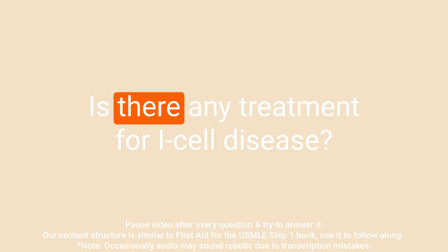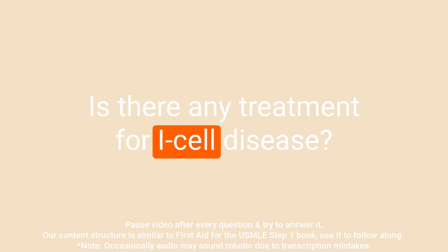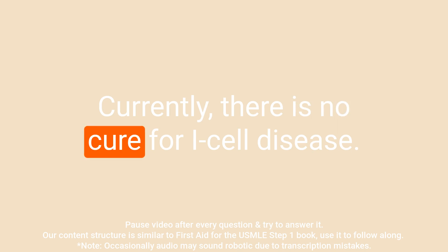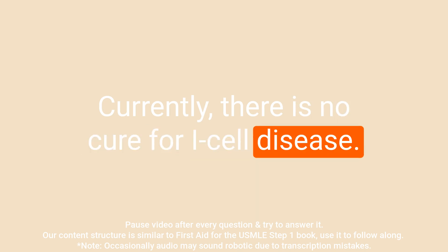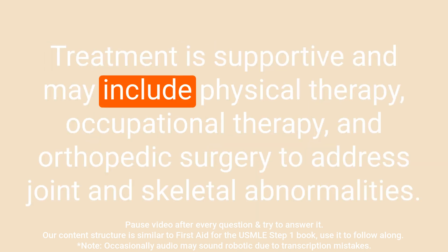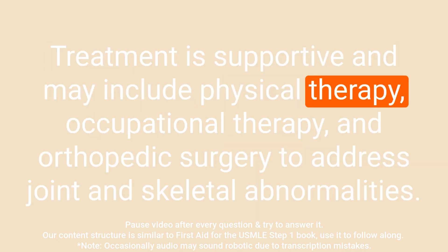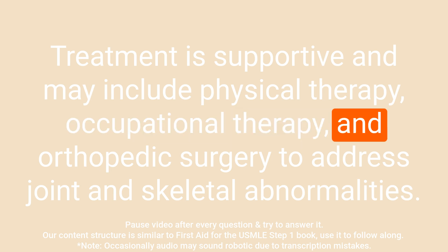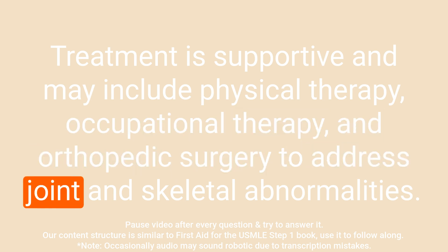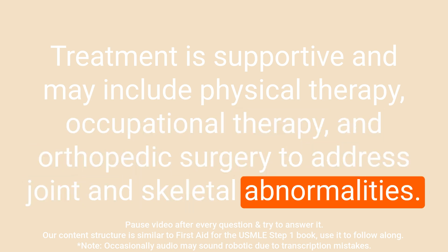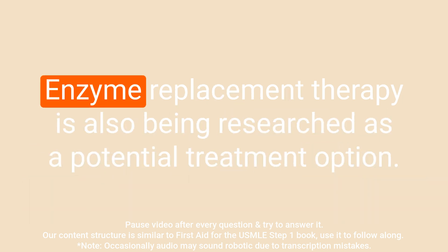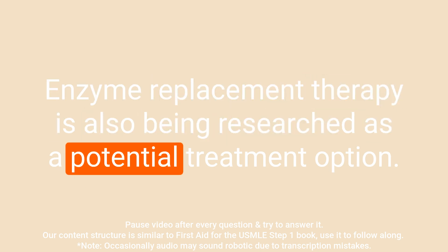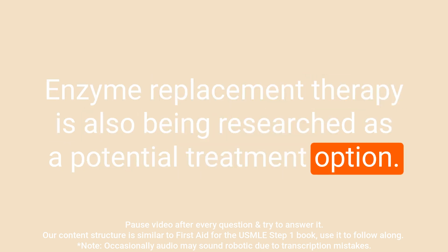Question: Is there any treatment for I cell disease? Answer: Currently, there is no cure for I cell disease. Treatment is supportive and may include physical therapy, occupational therapy, and orthopedic surgery to address joint and skeletal abnormalities. Enzyme replacement therapy is also being researched as a potential treatment option.